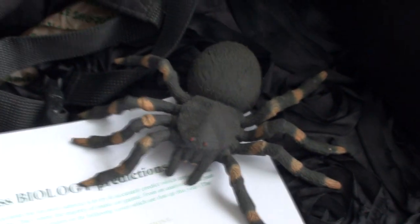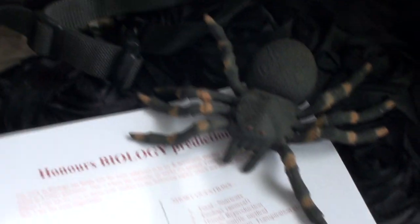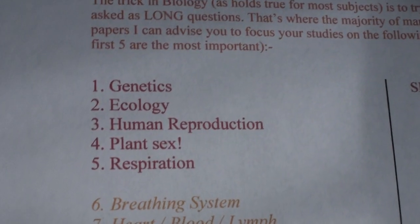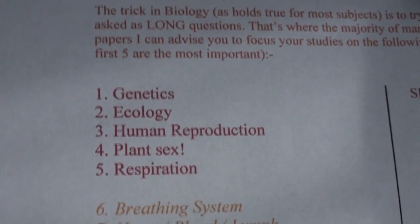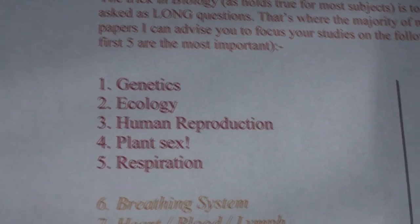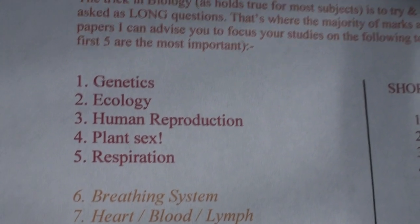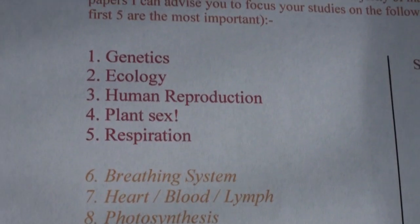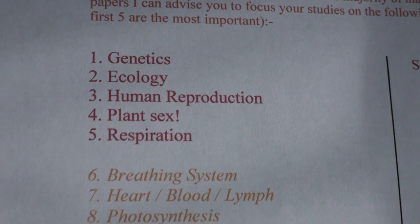That's my tips for what's most likely to come up in the Ordinary Level biology. Now for Higher Level — this would be our list. Once again, you're guaranteed long questions on genetics and ecology. Let's hope they're pretty nice this year. Human reproduction should come up in some form as a long question.